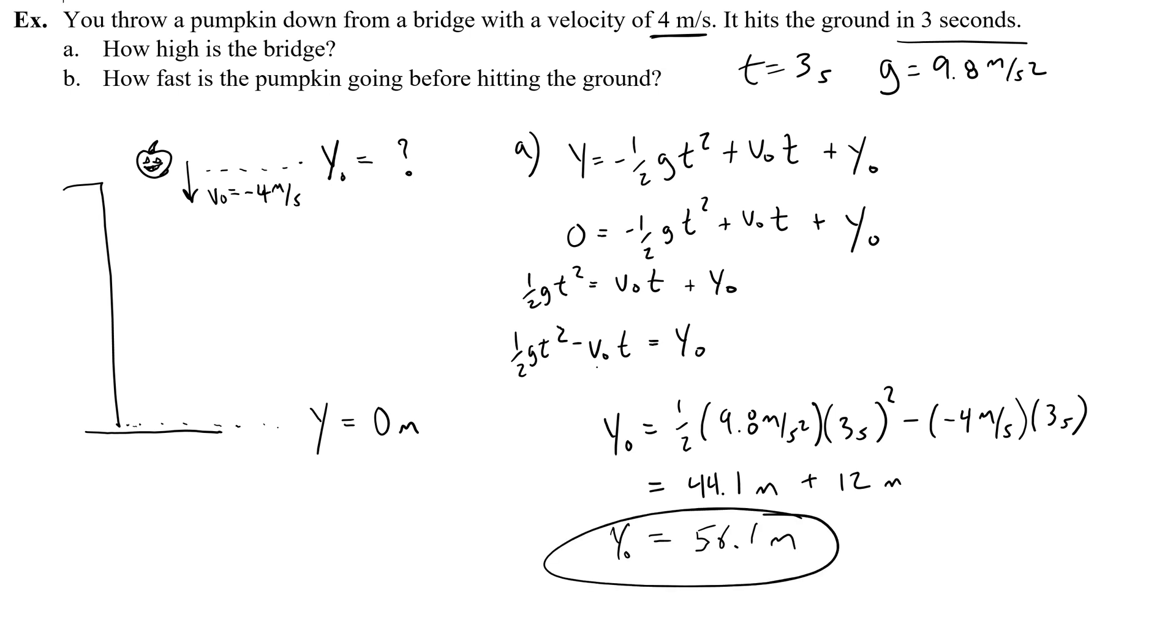So this first term is going to give me 44.1 meters, and then the second term is going to be a positive 12. So add those two together and you get 56.1 meters. So that is the initial height, and therefore the height of the bridge, because that's where you threw the pumpkin down from.